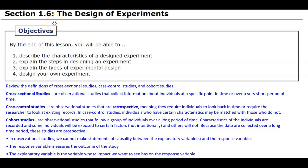Section 1.6: the design of experiments. Objectives. By the end of this lesson, you will be able to describe the characteristics of a designed experiment, explain the steps in designing an experiment, explain the different types of experimental design, and then design your own experiment.